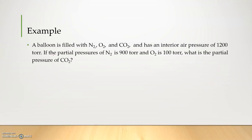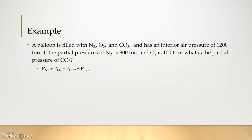So here's an example. We have a balloon and it's filled with nitrogen gas, oxygen gas, and carbon dioxide. It has an interior pressure of 1200 torr. If the partial pressure of N₂ is 900 torr and O₂ is 100 torr, what is the partial pressure of carbon dioxide? We would use the equation we just went over: total pressure equals the partial pressure of nitrogen plus the partial pressure of oxygen plus the partial pressure of carbon dioxide.